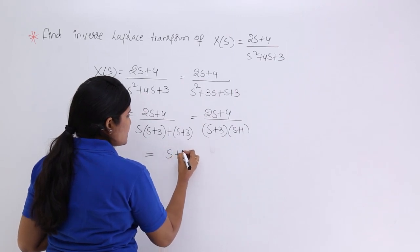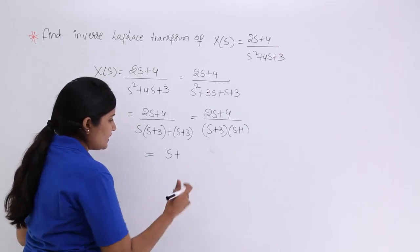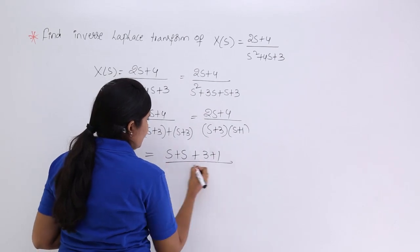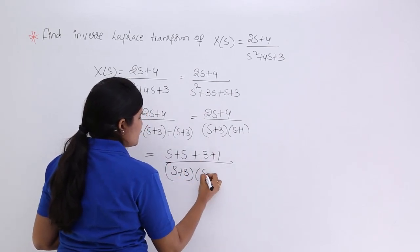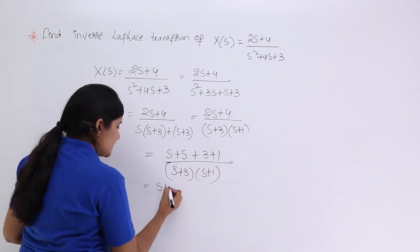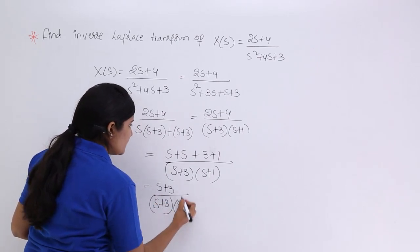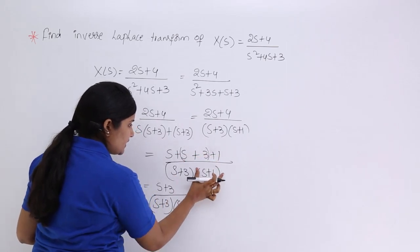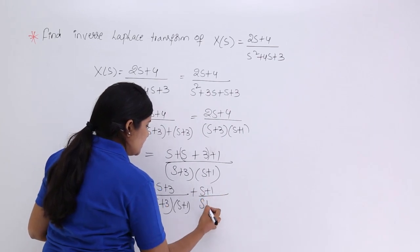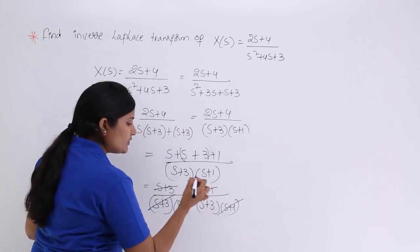I rewrite 2s as s + s, and 4 as 3 + 1, giving (s + s + 3 + 1) / ((s + 3)(s + 1)). This can be split as (s + 3) / ((s + 3)(s + 1)) + (s + 1) / ((s + 3)(s + 1)). The (s + 3) terms cancel in the first fraction and the (s + 1) terms cancel in the second fraction.